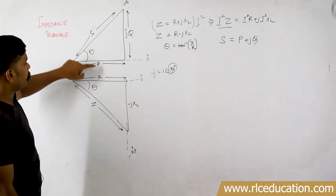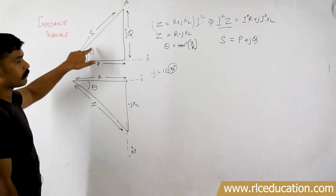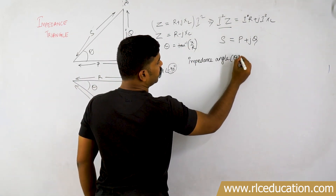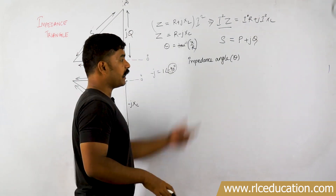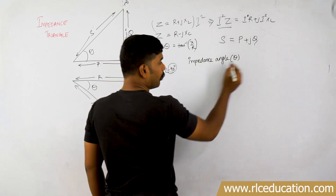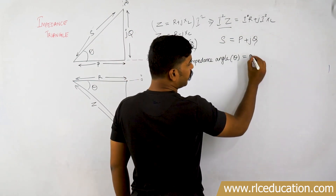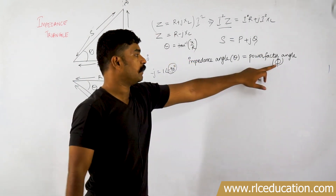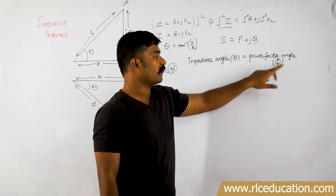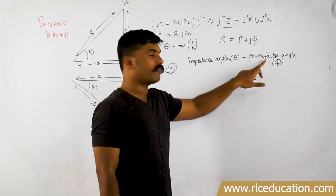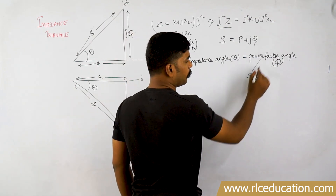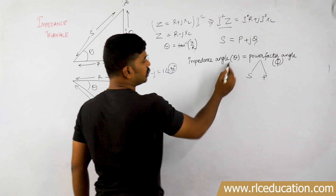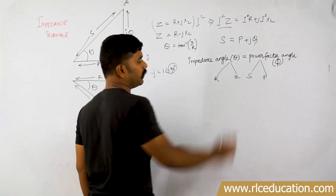The angle between apparent power and active power is theta, which is also called the impedance angle. In an impedance triangle, that angle is called the impedance angle. But when you write a power triangle, this impedance angle is also called the power factor angle, represented by phi. So impedance angle is theta; power factor angle is phi. The angle between apparent power and active power is the power factor angle, whereas the impedance angle is the angle between R and Z.